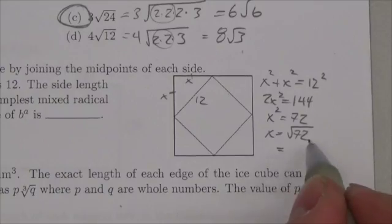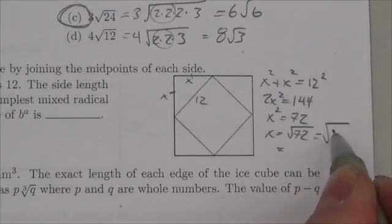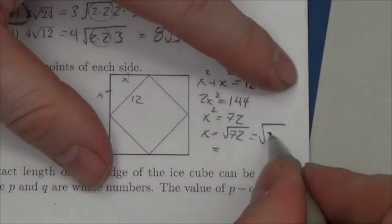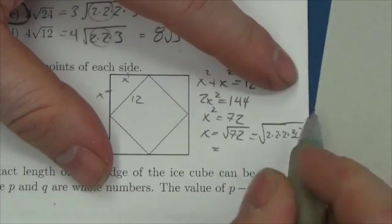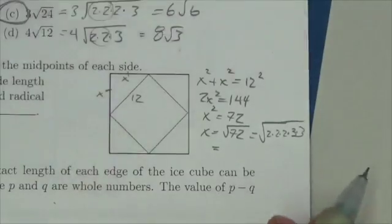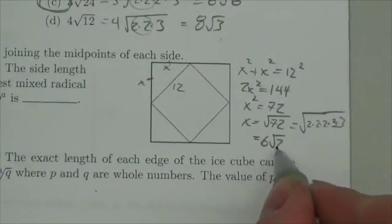And then I would reduce this, because 72 is the same as the square root of, and then there's a lot going on here. This is 2 times 2 times 2, that's 8 times 9. So there's a pair of 2s and a pair of 3s that I can pull out of that. So 6 root 2.